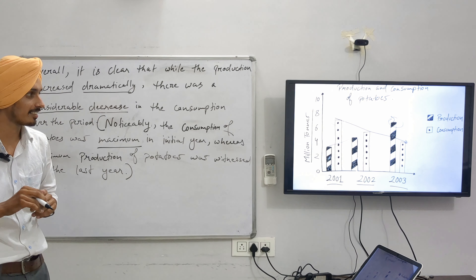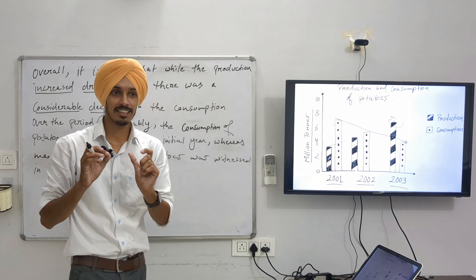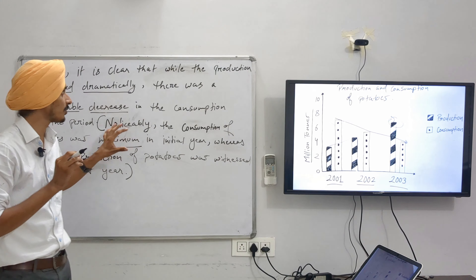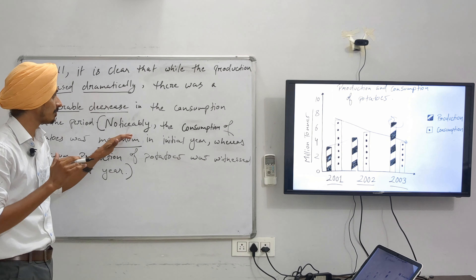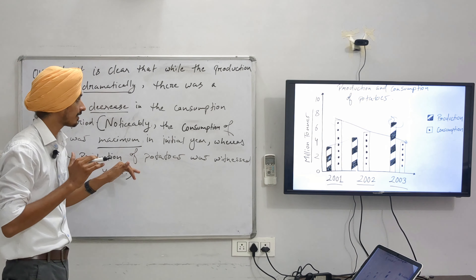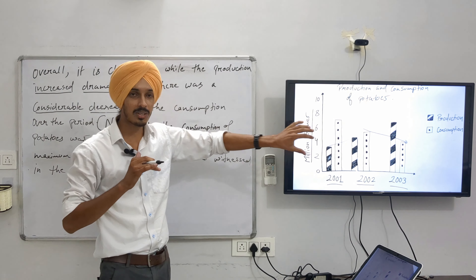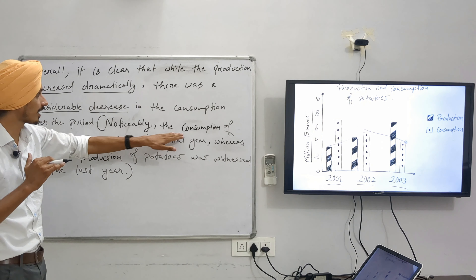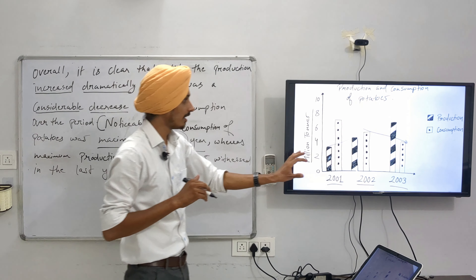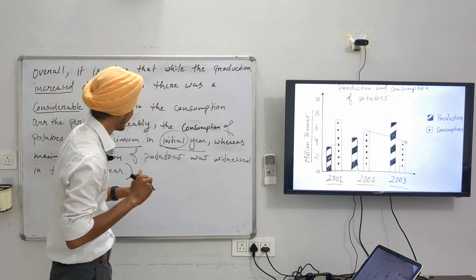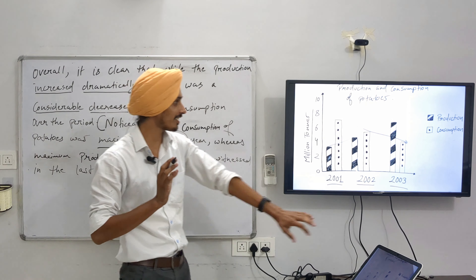We are going to change this data into sentences. I have started the sentence with 'noticeably' — this is a connector we use to connect sentences and to put emphasis on something. The word 'noticeably' means the things we are going to write are easy to notice in the chart. I have written: 'Noticeably, the consumption of potatoes was maximum in the initial year' — initial means starting year. The consumption is maximum in the starting year.